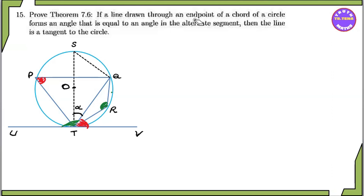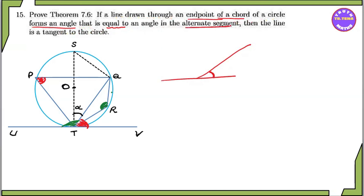If a line is drawn through an endpoint of a chord of a circle, it forms an angle equal to the angle in the alternate segment. The angle is the length of the angle in the alternate segment.